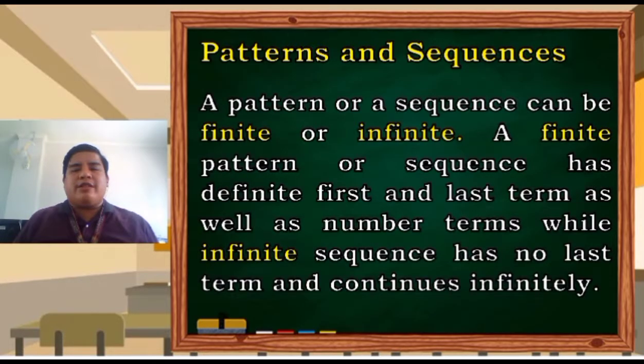A pattern or a sequence can be finite or infinite. So what is the difference between the two? A finite pattern or sequence has a definite first and last term as well as the number of terms. While the infinite sequence has no last term and continues infinitely. So when we say finite, you can count how many terms are there because you know the first and the last term. While in the infinite sequence, there is an endless succession of numbers.